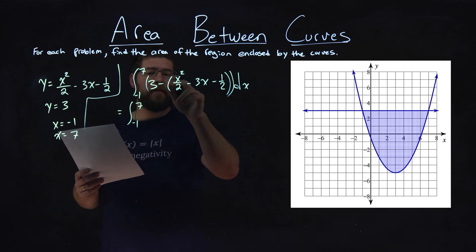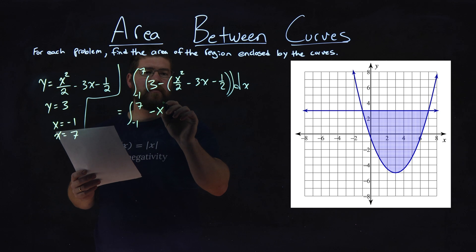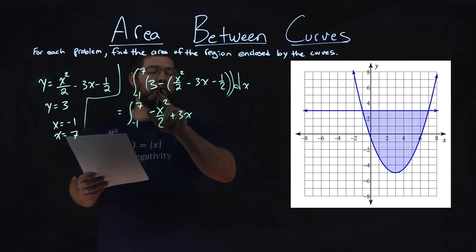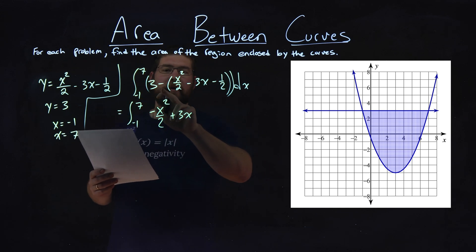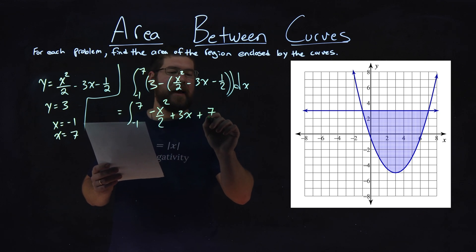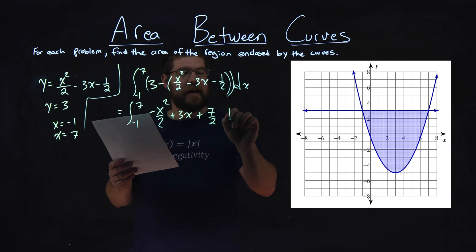So the first one's the x squared. We have negative x squared over 2, and then minus a negative is plus a positive 3x. And here we can combine our like terms: 3 minus a negative one-half is plus a positive one-half, which is 7 halves dx.